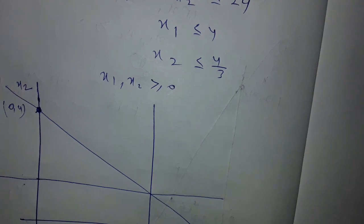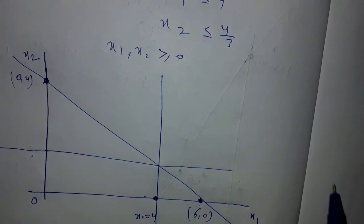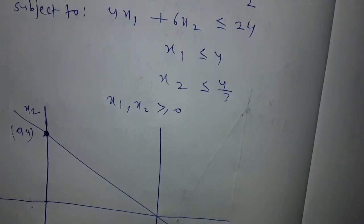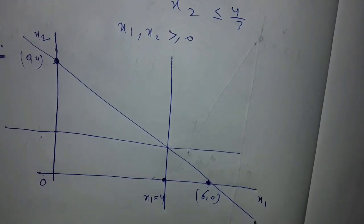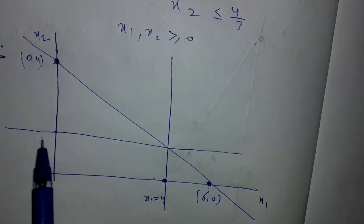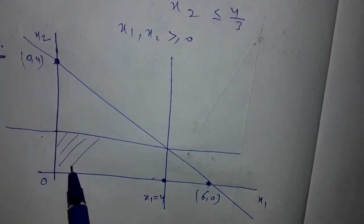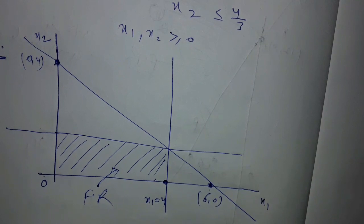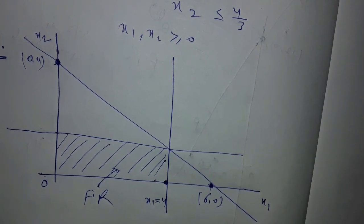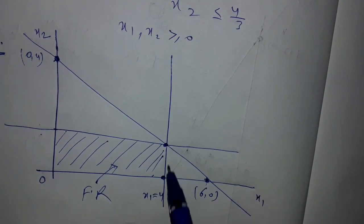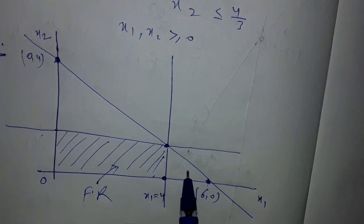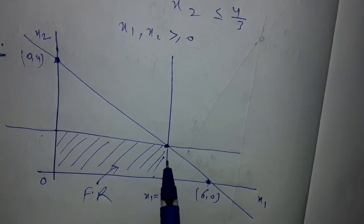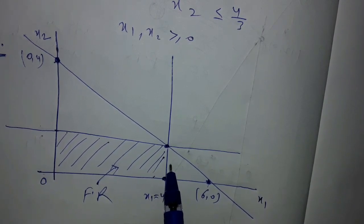For selecting the feasible region, since all constraints are less-than-or-equal-to type, all lines move towards the origin. The common region is the feasible region. Within this feasible region, there is a point where more than two lines intersect at the same point — this is the case of degeneracy.